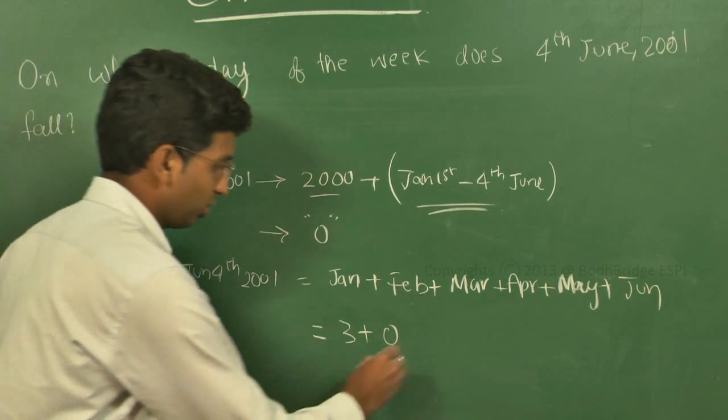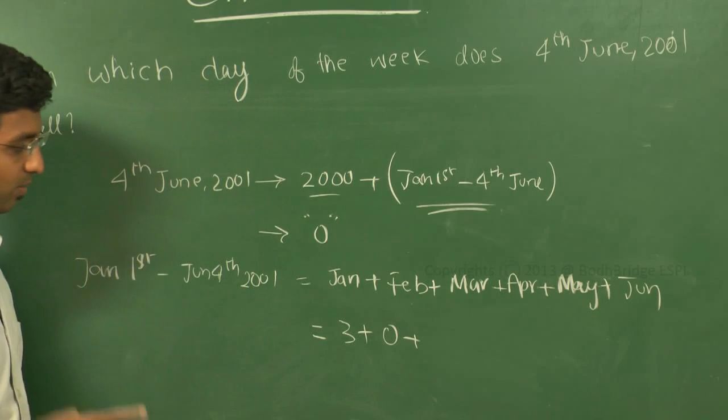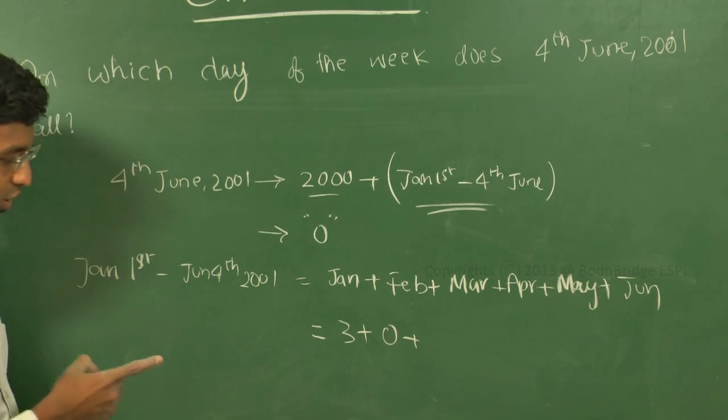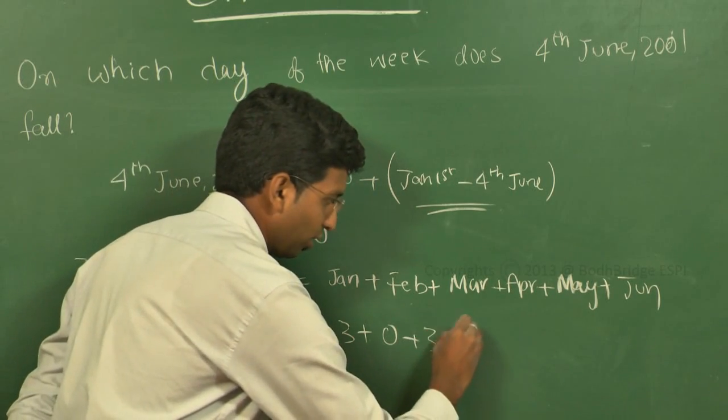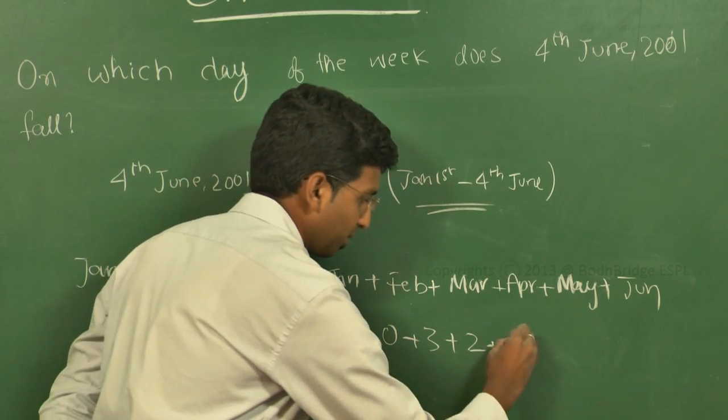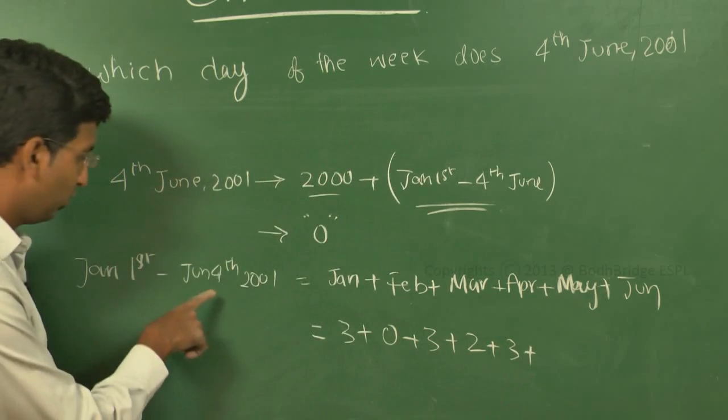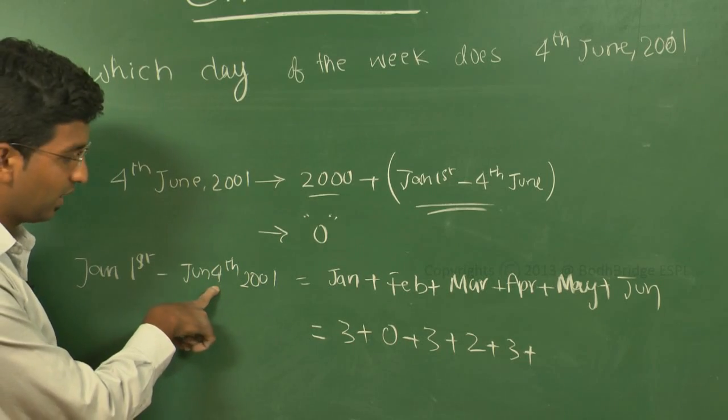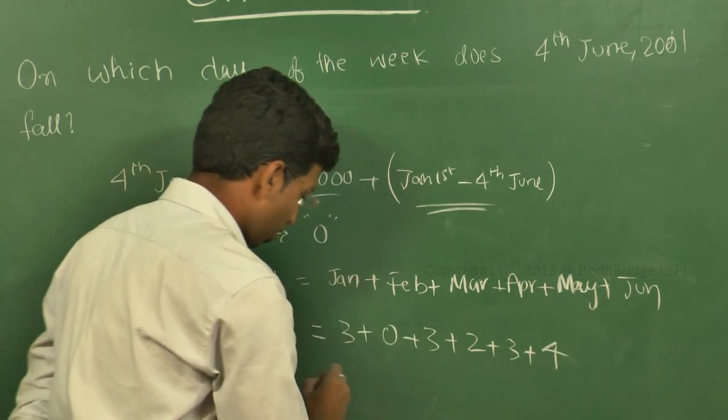In March, because it's a 31-day month, we will have three odd days. April will have only two odd days. May will have three. And since we need June 4th, June will contribute four odd days.